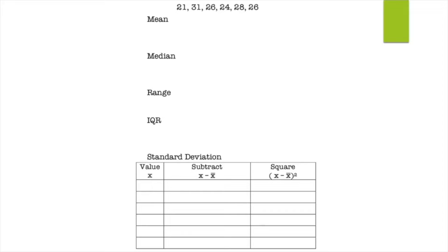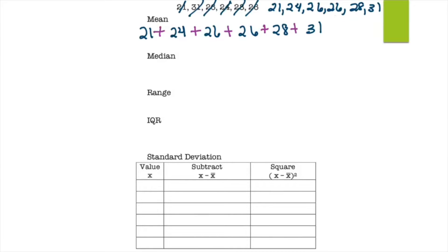For this example, find the mean, median, range, IQR, and standard deviation for: 21, 31, 26, 24, 28, 26. First, list in order from least to greatest: 21, 24, 26, 26, 28, 31. Check that all six numbers are included. To find the mean, add them all together: 21 + 24 + 26 + 26 + 28 + 31 = 156, then divide by 6, which equals 26.